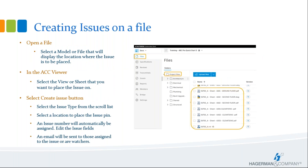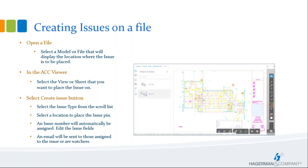To create an issue in a view, we first need to open a file. You could open files from an existing file on the Issues log, or simply open a file from Docs. In this example, I'm opening a file from the Docs module. Models and files can also be opened from various other modules depending on your project — design collaboration or model coordination modules. When a file is selected, it opens in the ACC Viewer, and then you can select the Create Issues button on the right side of the screen.